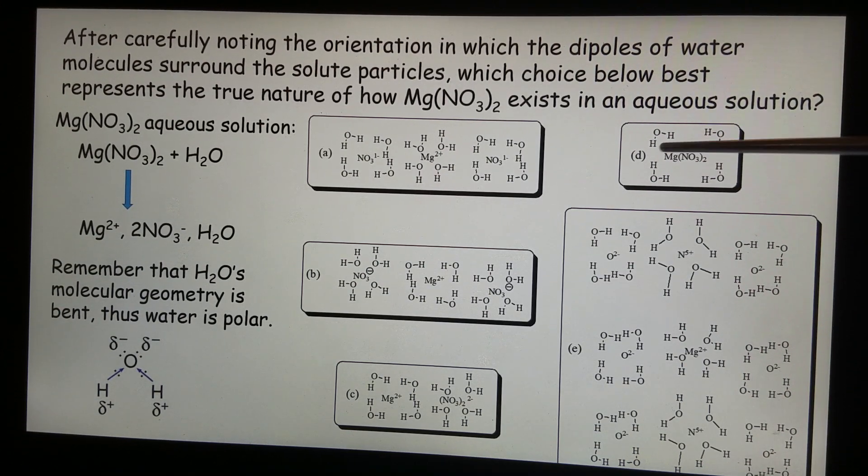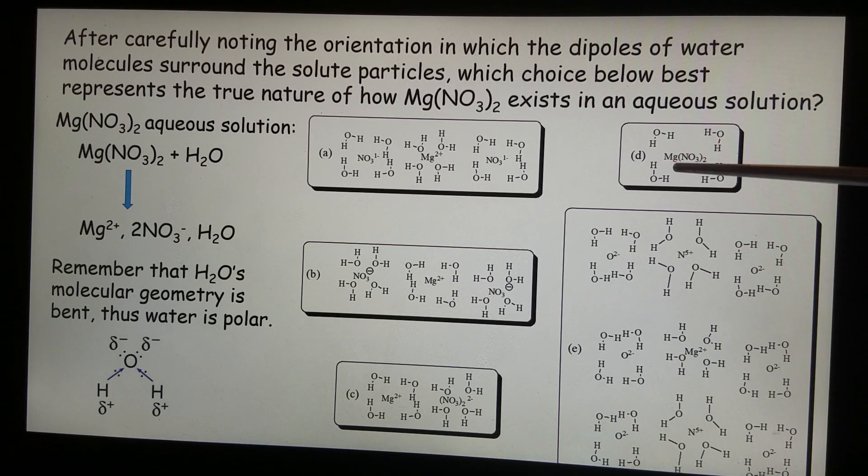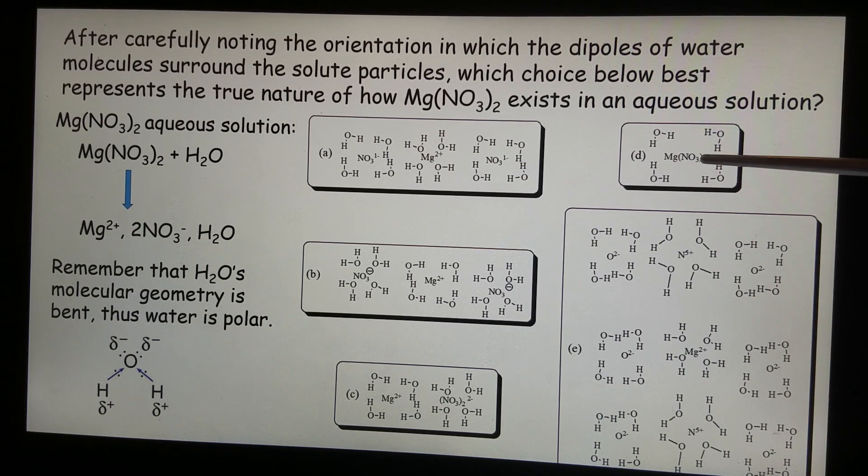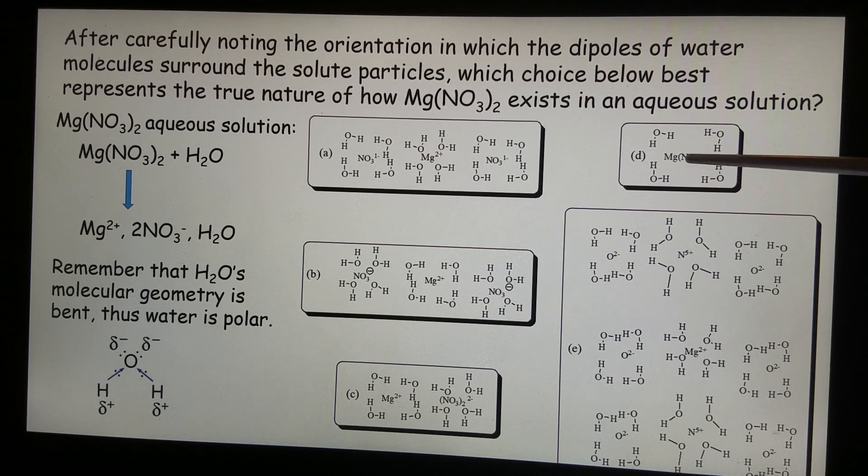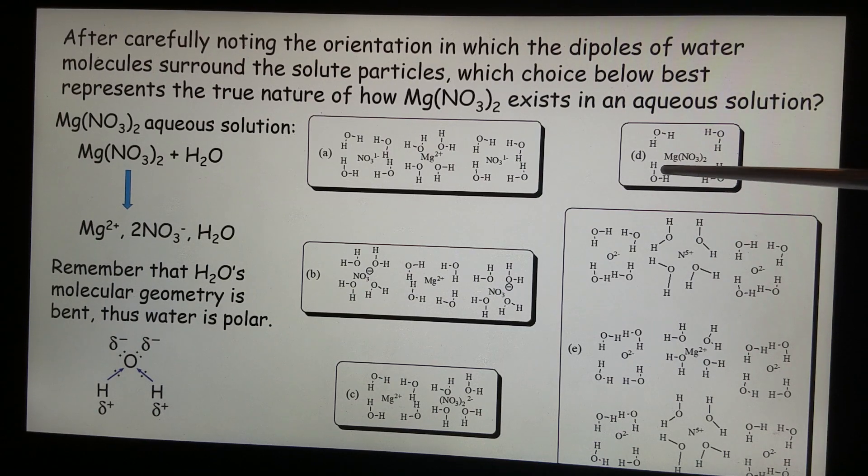Now D, you see, the way it presents here is magnesium nitride as precipitate. No, magnesium nitride is soluble in water. Remember the solubility rules, nitride is always soluble. Therefore D is wrong because of this precipitate.